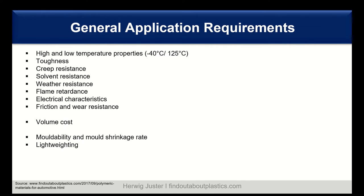What are some general application requirements for under the bonnet in the internal combustion engine? We have high and low temperature properties: minus 40 degrees C and 125 up to 150 degrees C is possible. The materials need a certain level of toughness, creep resistance, solvent resistance, weather resistance, flame retardants, electrical characteristics, and friction and wear resistance — especially in the transmission area. Costs are also important, so volume costs need to be reasonable.